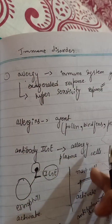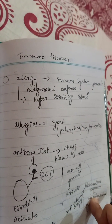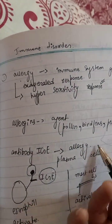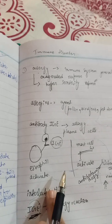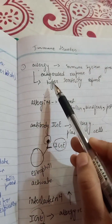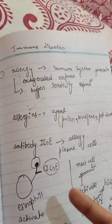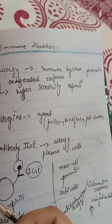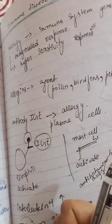Just because of the histamine, many symptoms occur like swelling, mucus secretion, inflammation, and allergic responses are generated. So this was about allergy. After that, we will be discussing monoclonal antibodies, which is also a technique — that we will discuss in the next video.